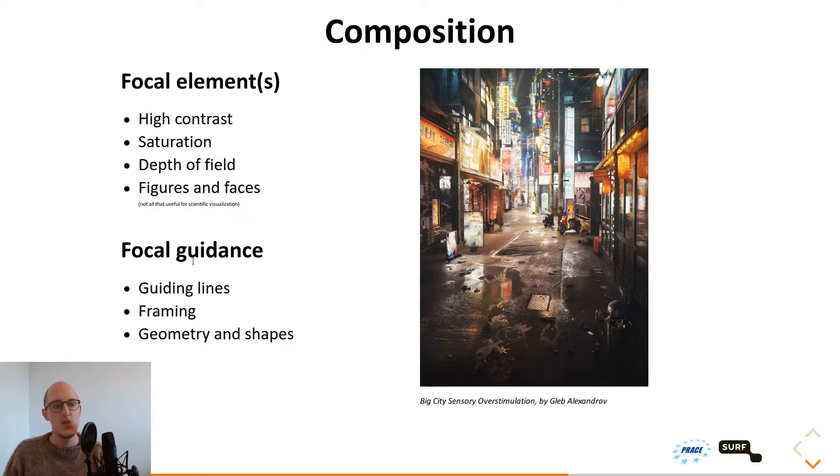Besides the focal elements, you also have focal guidance, which is guiding the eye towards the focal elements. In this case, you have guiding lines, for example, perspective lines or framing. Framing is, for example, when you place a building in the middle or on a third, or placing objects so that another object is framed between these objects. Geometry and shapes, which is also a way of guiding your eye towards a certain direction.